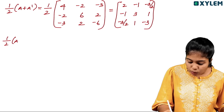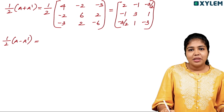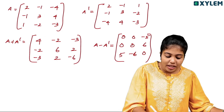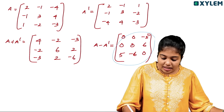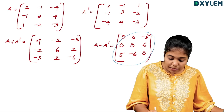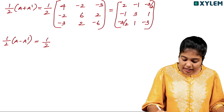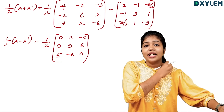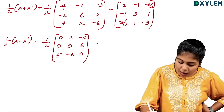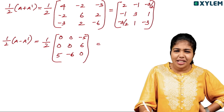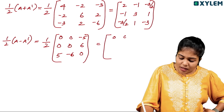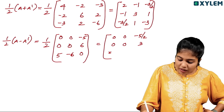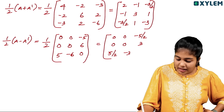Now half into A minus A transpose. We will add A minus A transpose and multiply all elements by 1/2. The result is: 0, 0, minus 5/2, 0, 0, 3, 5/2, minus 3, 0.